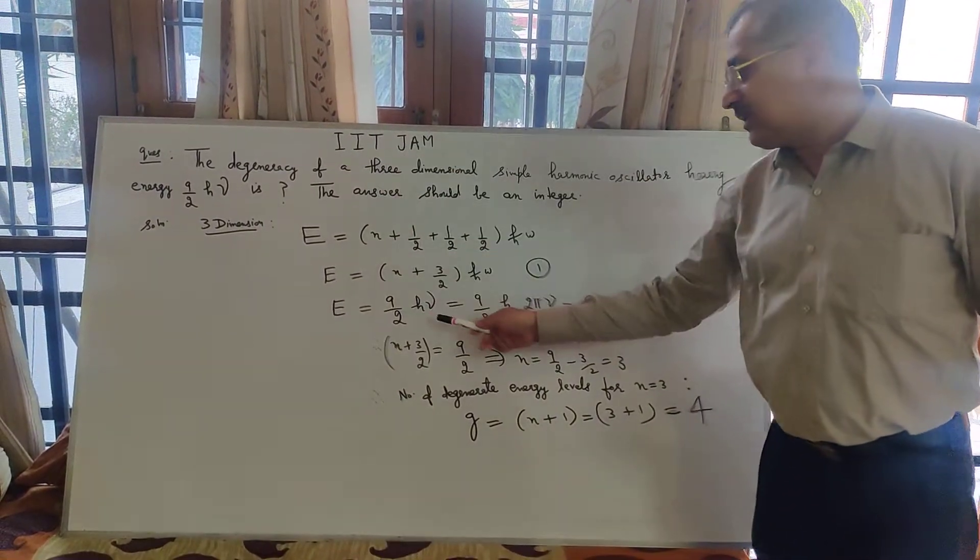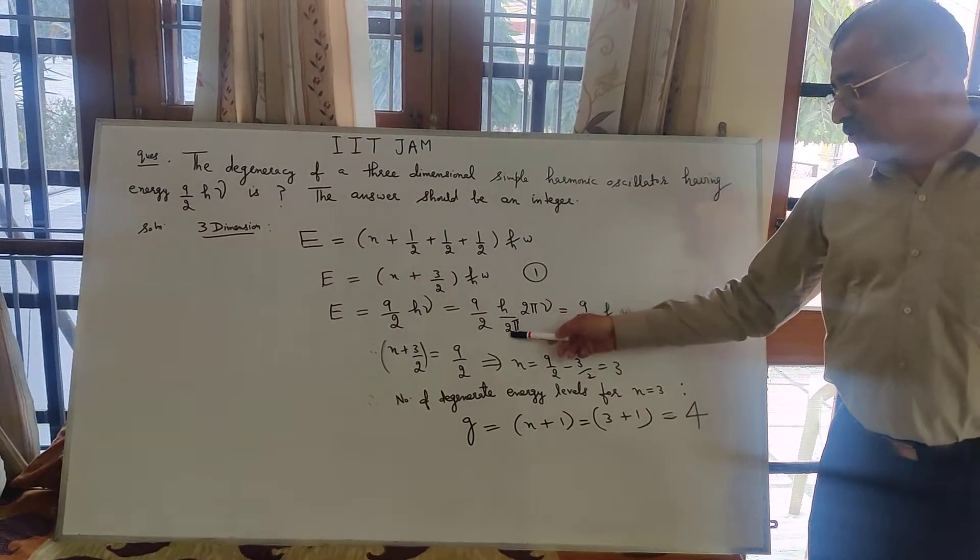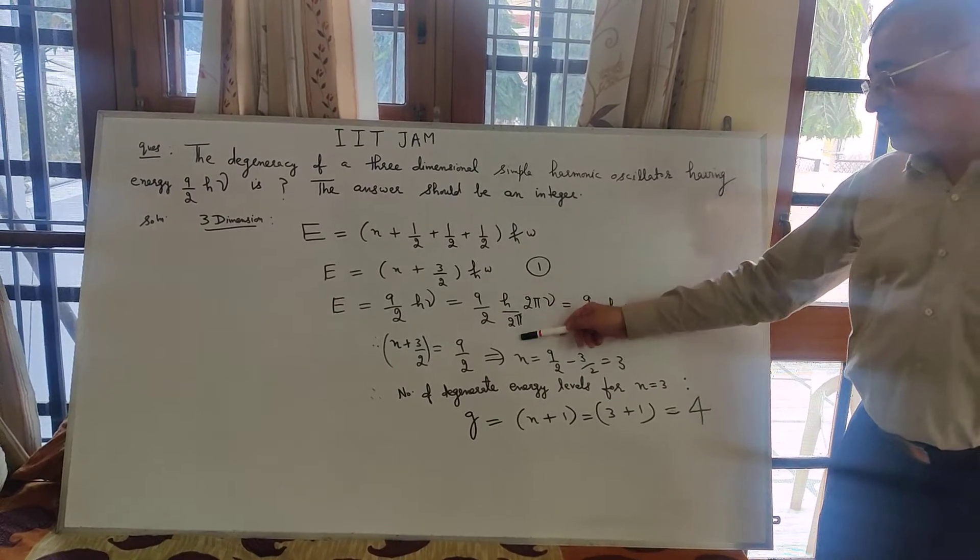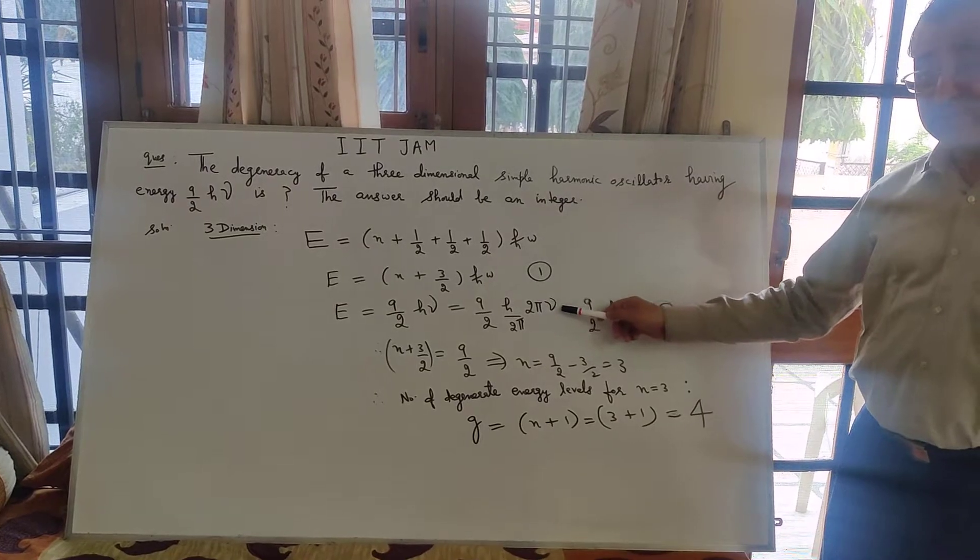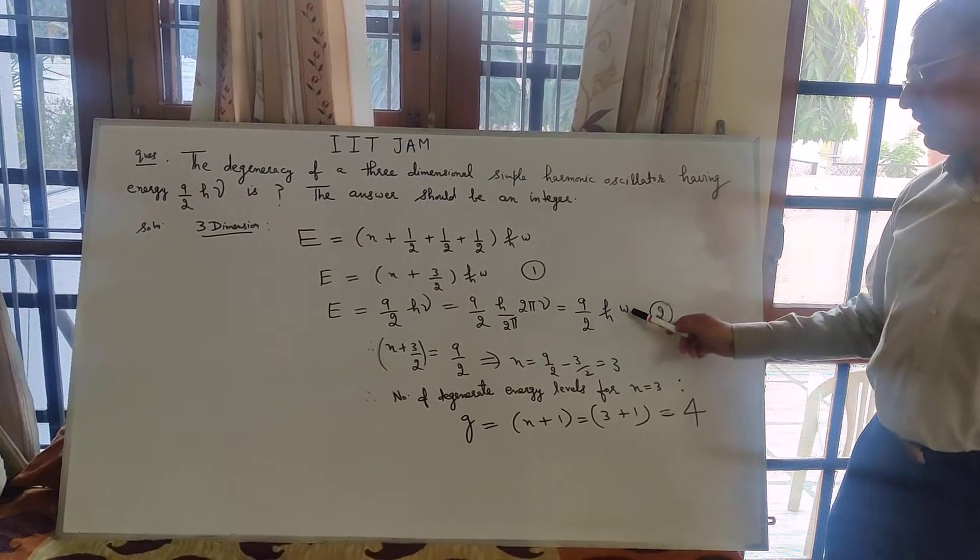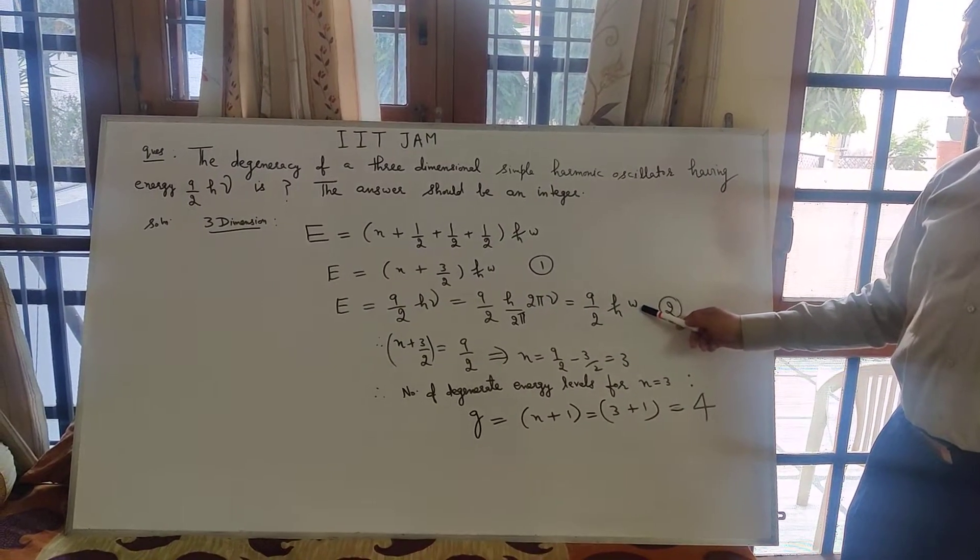And given energy is 9 by 2 h nu. Multiply 2 pi below and above. h over 2 pi is h cross, the reduced Planck constant. 2 pi nu, nu is quantum frequency. 2 pi nu is angular frequency omega.